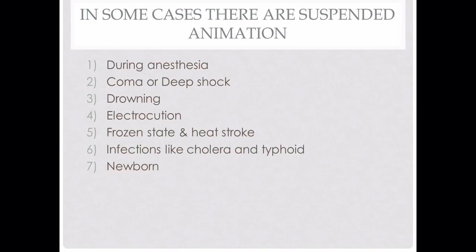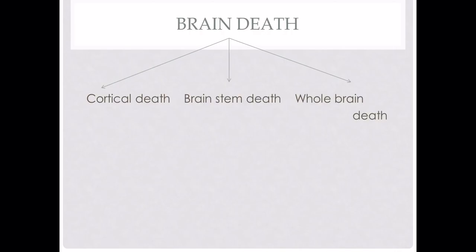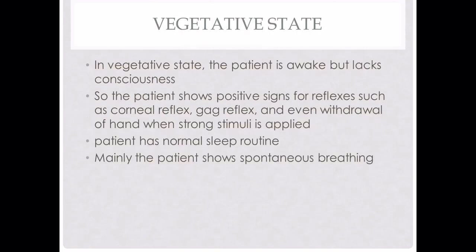Finally, we come to brain death. Brain death is of three types: cortical death, brain stem death, and whole brain death. Before going deeper, let's see the vegetative state and the comatose state. The vegetative state is a state where the patient is awake but lacks consciousness — the patient has awareness but lacks consciousness.